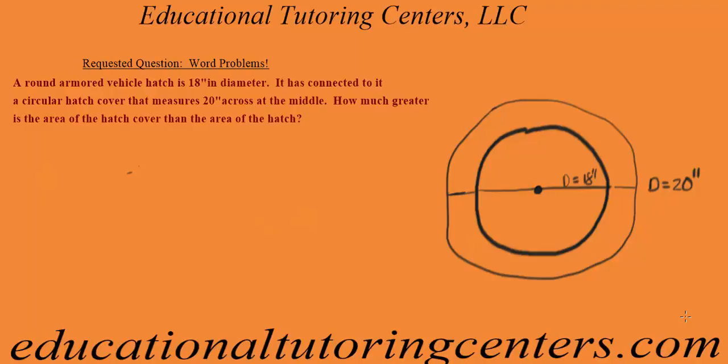Okay, so this problem says a round armored vehicle hatch is 18 inches in diameter. It has connected to it a circular hatch cover that measures 20 inches across at the middle. How much greater is the area of the hatch cover than the area of the hatch?